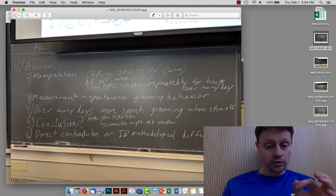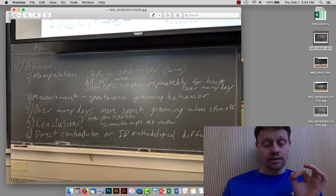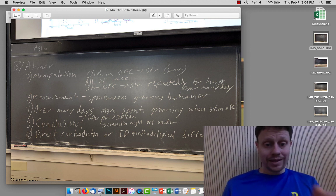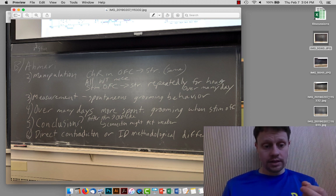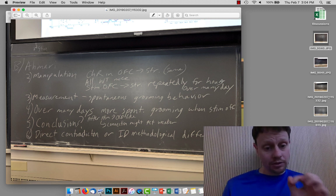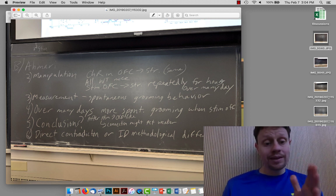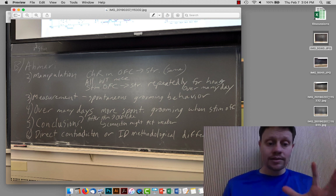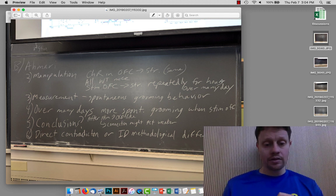So the conclusion is that activating this orbital frontal cortex to striatum is bad. Doing it too much causes OCD. A more nuanced conclusion, perhaps a little bit more speculative, is that perhaps this repeated activation causes the synapses to give up. That reconciles a little bit more with the other results.